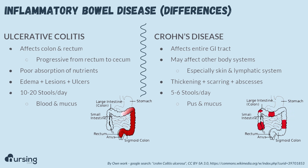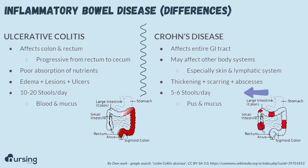With Crohn's disease, you're going to see inflammation that causes thickening and scarring of the walls of the GI tract. These thick walls often become abscessed. Patients are also going to have difficulty absorbing nutrients and water, so we still see multiple stools a day, just not nearly as many as with ulcerative colitis.